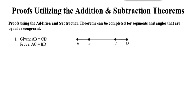We can use the addition and subtraction theorems for both line segments and angles, and we can use these theorems when segments or angles are either equal or congruent. For example, in the very first problem, we're given that the distance between A and B is the same as the distance between C and D — in other words, the length of AB is exactly equal to the length of CD.